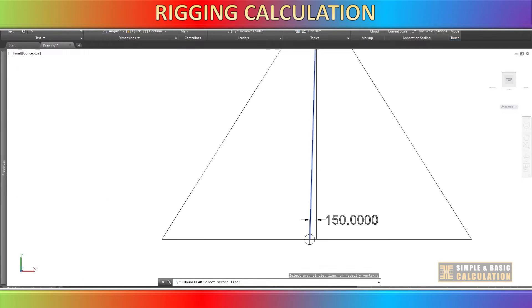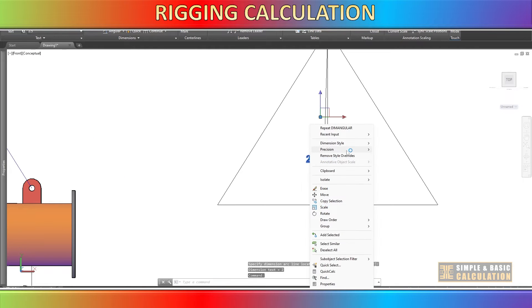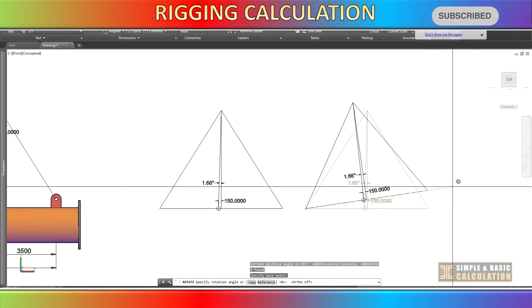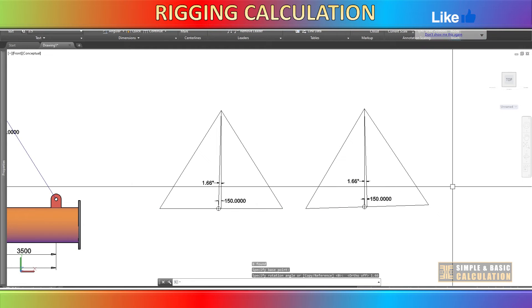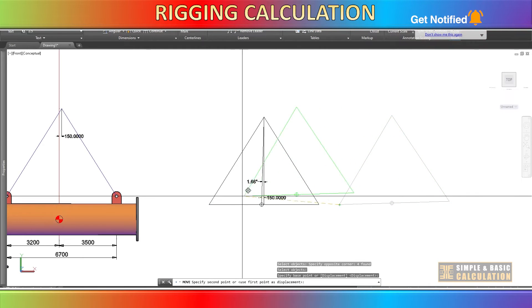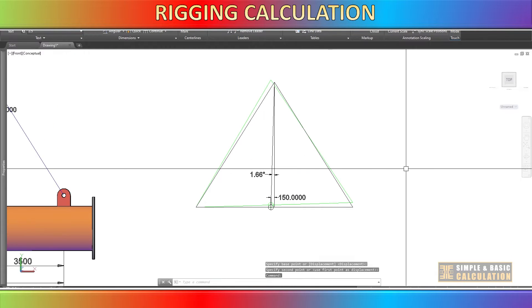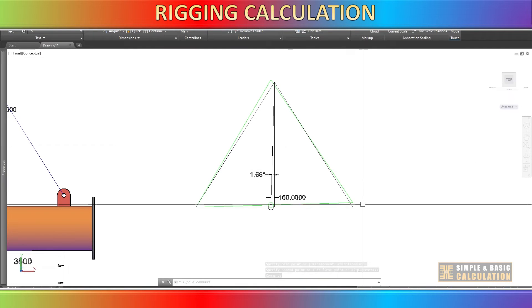Now you can see how much the cargo will tilt based on this offset. The cargo tilts around 1.66 degrees. Based on this 1.66 degree tilt, the cargo will rise around 194 millimeters at lifting point number two and drop at lifting point number one.